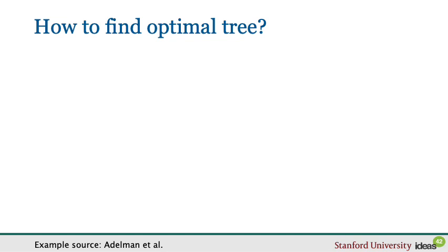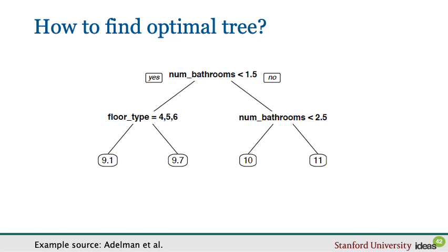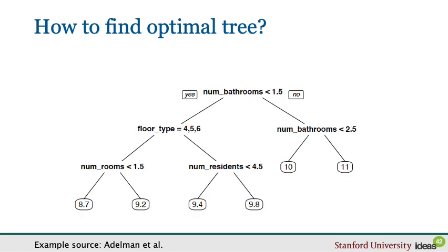I now want to discuss how to find an optimal tree. There are two challenges. The first is computational: it's not easy to find an optimally-fitting tree. We solve this with a greedy algorithm that recursively builds the tree by always doing the best thing one step ahead — first splitting on the variable that looks best, then within each leaf splitting again on the variable that looks best, without considering future splits.